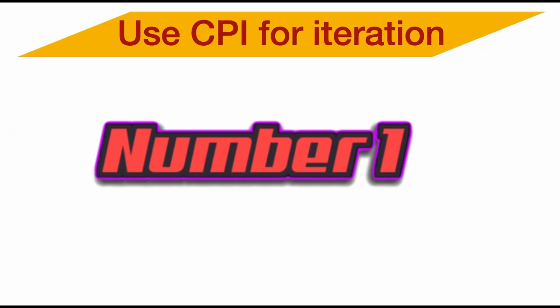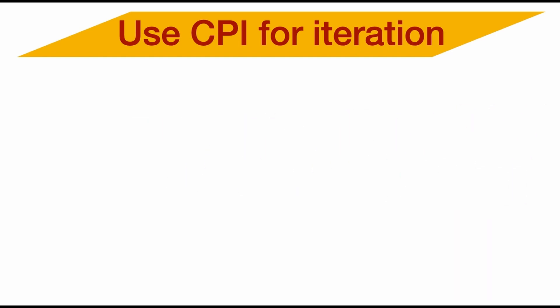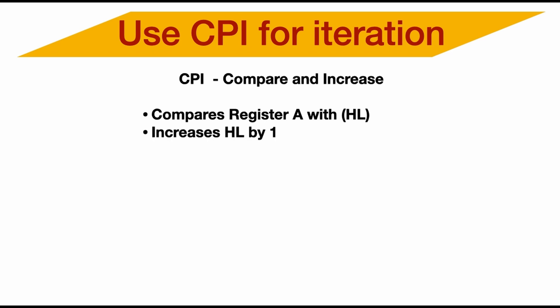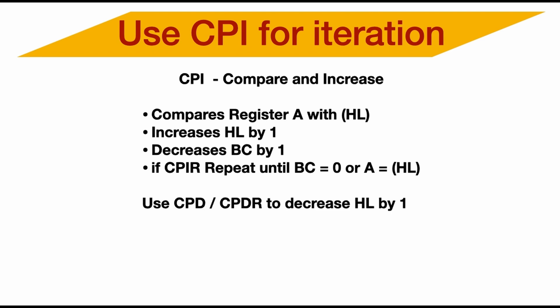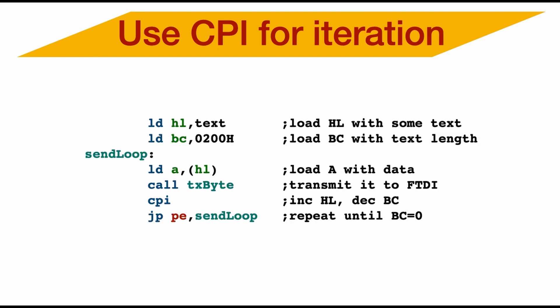Number one, use CPI for iteration. What is the CPI instruction? It stands for compare and increase. How does it work? It compares the register A at the address HL. It also increases HL by one, decreases BC by one. And if you use CPIR, it will repeat until BC equals zero or A equals the contents of HL. There's also CPD and CPDR to decrease HL by one.